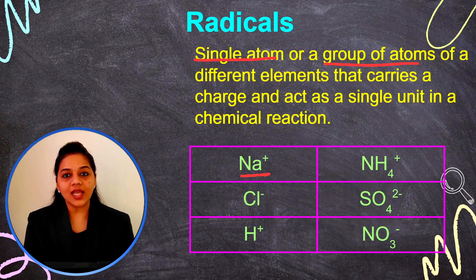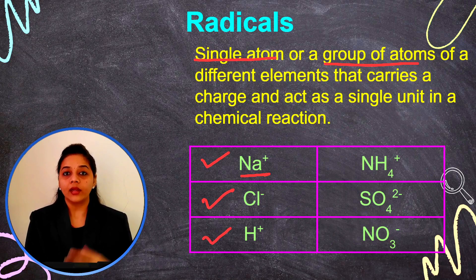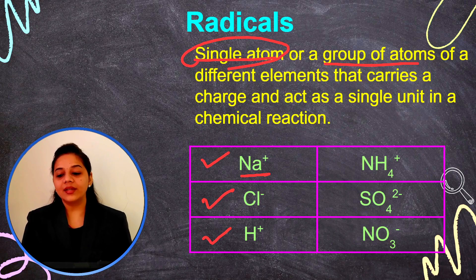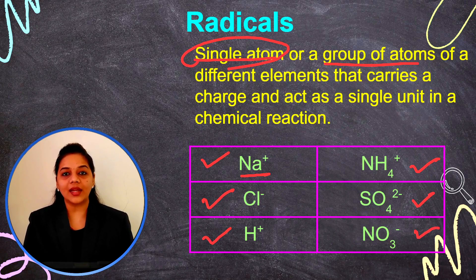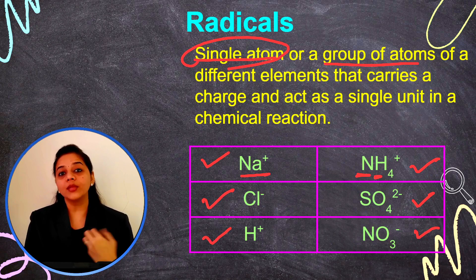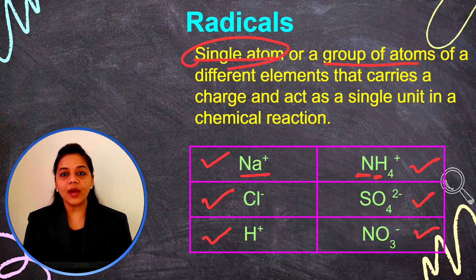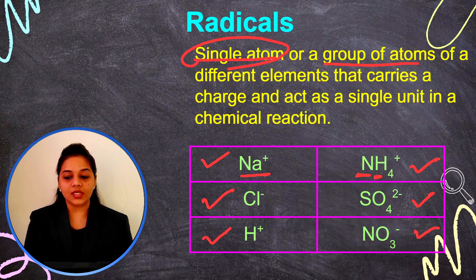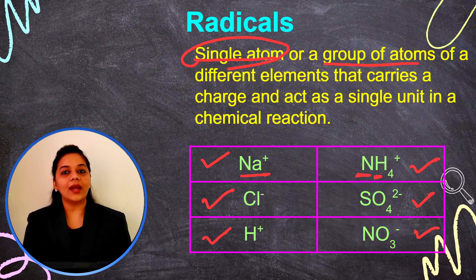In the left-hand side column: sodium ion, chloride ion, and hydrogen ion — they are made from a single atom. On the right-hand side: ammonium ion, sulfate ion, and nitrate ion — they are made from different elements and a group of atoms. Ammonium ion is made from nitrogen and hydrogen, sulfate from sulfur and oxygen, and nitrate from nitrogen and oxygen.